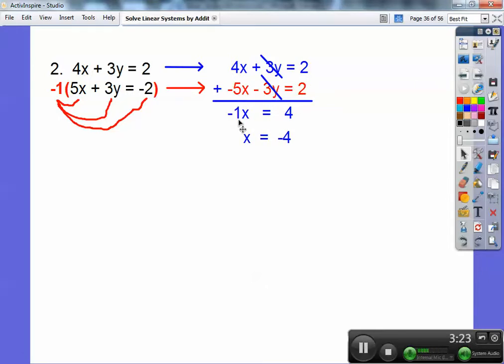Remember, negative 1x equals 4. That means you divide both sides by negative 1. You get x equals 4. I'm sorry, x equals negative 4. I can put in x equals negative 4 into that equation, that equation, or this red guy over here. It doesn't matter. I'm going to plug it back up into the top equation.